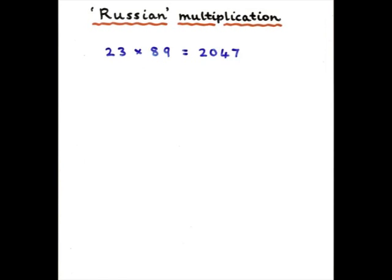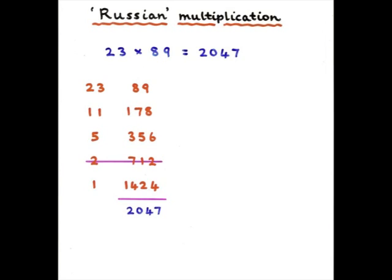Let's keep on halving 23 and we'll double 89. Halving 23, I get 11 — actually 11 and a half, but let's forget about the half. Halving 11, you get 5; we can ignore the fraction. 5 gives you 2, 2 gives you 1. Meanwhile, you've been doubling 89 to 178, 356, 712, and 1,424.